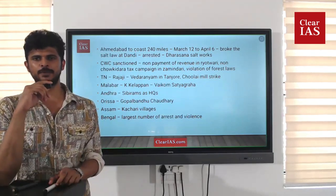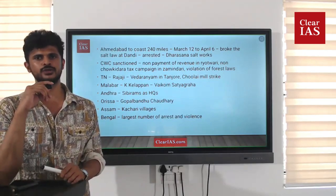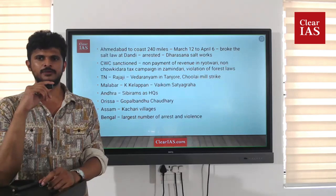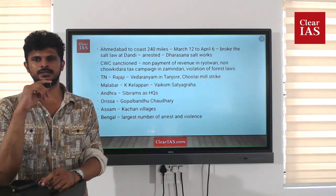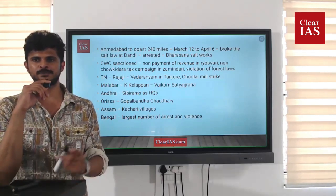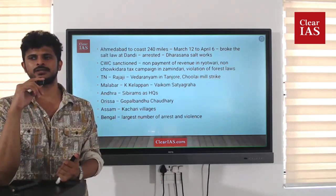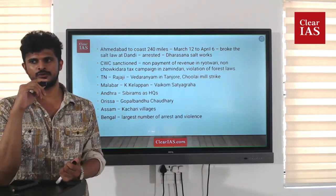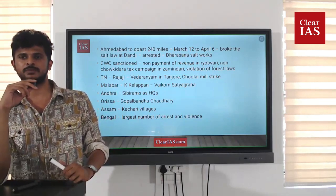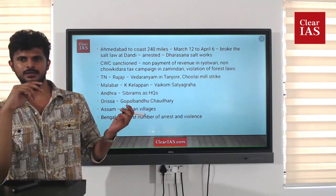The march lasted from March 12 to April 6, taking almost one month by foot. Since he broke the law, Gandhiji was immediately arrested by the British. Before being arrested, he had planned a raid on a government salt works called Dharasana Salt Works. The picketing of Dharasana was led by Sarojini Naidu on his behalf. Since Gandhiji was arrested, other plans were sanctioned by the Central Working Committee (CWC) of the Congress, who began planning further schemes.